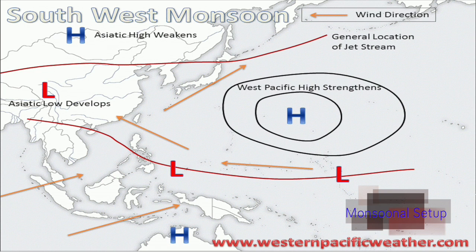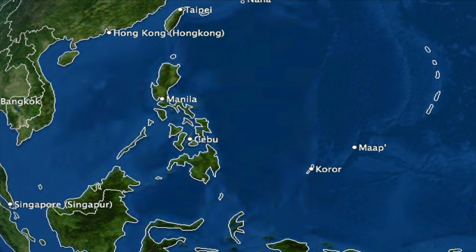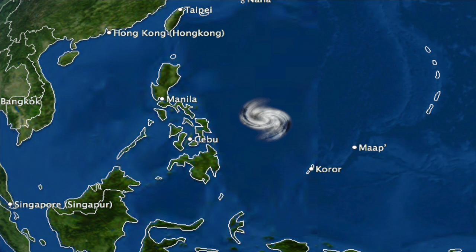Especially when you get an area of low pressure, typically a tropical system, setting up in the Philippine Sea just off the eastern seaboards of the Philippines. When this happens you often see an enhancement of the monsoon.